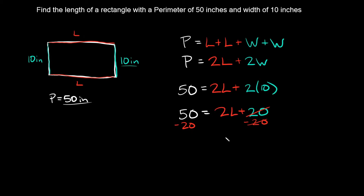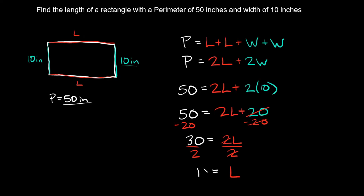And that's equal to 50 minus 20, which is equal to 30. Now we have to get rid of this 2, so in order to undo this multiplication, we're going to divide by 2 on both sides. These 2s cancel out, so we're just left with L, and that's equal to 30 divided by 2, which is equal to 15. We have to put units on it — the whole problem is in inches — so L is equal to 15 inches.